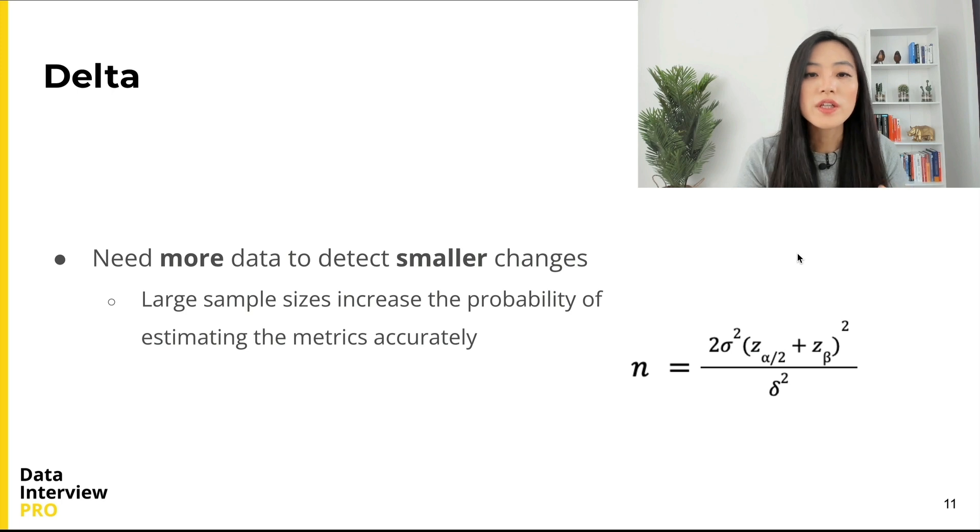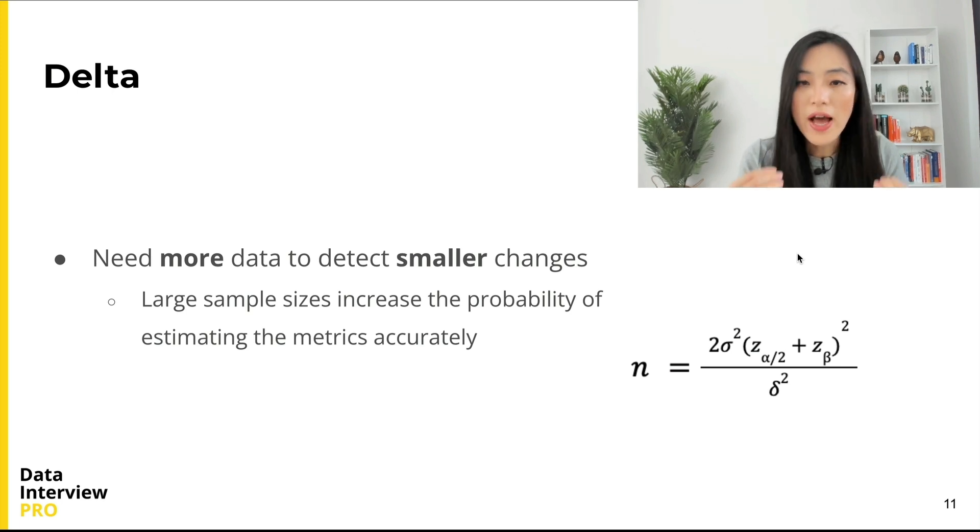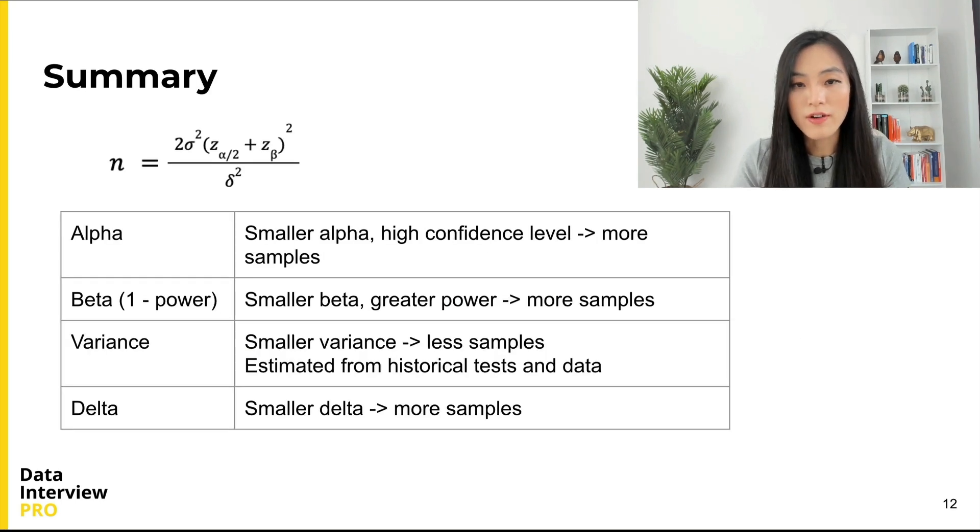It means when we want to detect smaller changes, we will need more samples. We need a large enough sample to accurately estimate the difference, because large sample sizes increase the probability of estimating the metrics we are interested in accurately. So to summarize: the lower the α, the higher the confidence level and the more samples we need.